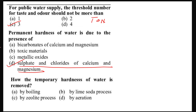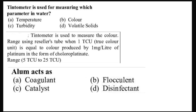The most preferable answer will be A. A tintometer is used for measuring what parameter? It is basically used for measuring color. A tintometer is an instrument used for measuring color in units of TCU — true color unit.